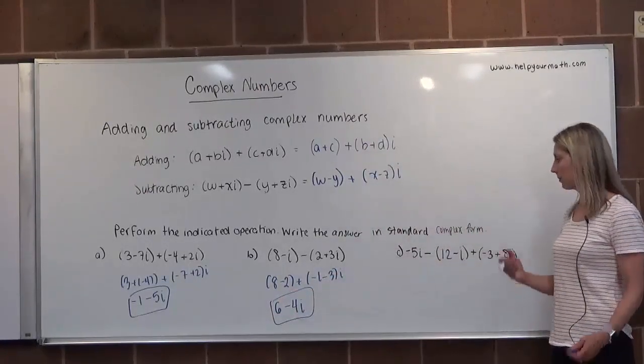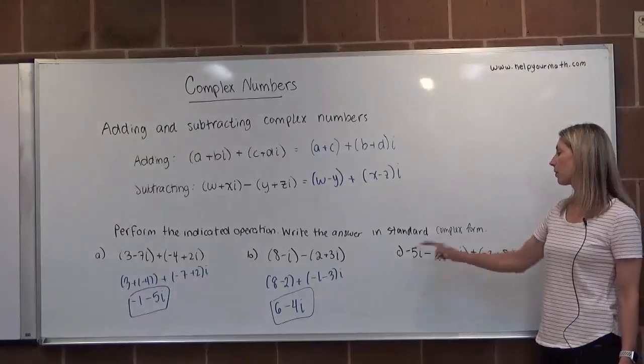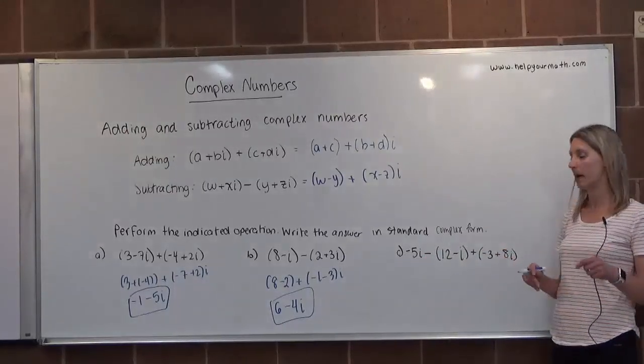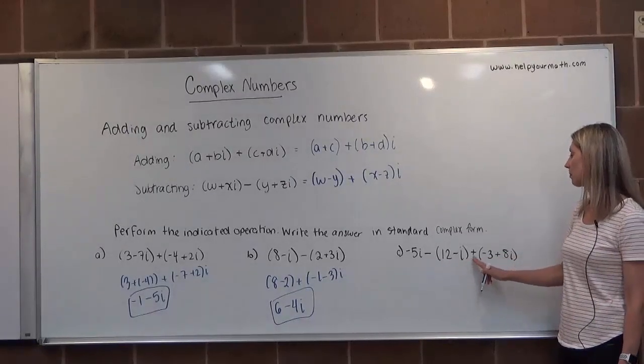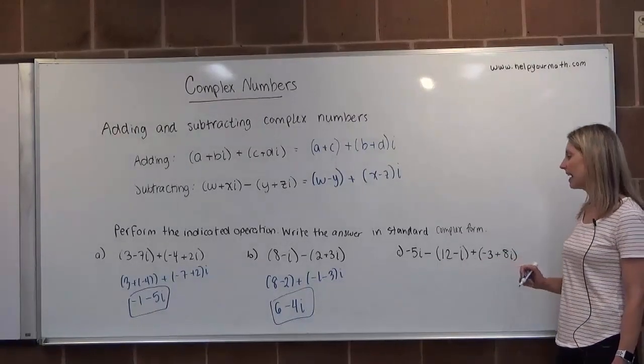In letter C, we have a little bit of everything. Our first complex number is just an imaginary number, negative 5I, minus, we're subtracting from it, 12 minus I, and then we're adding to it negative 3 plus 8I.